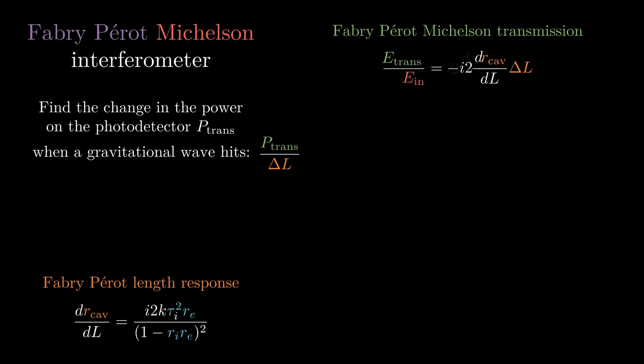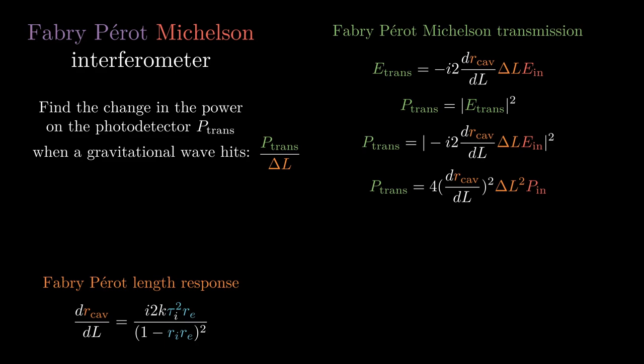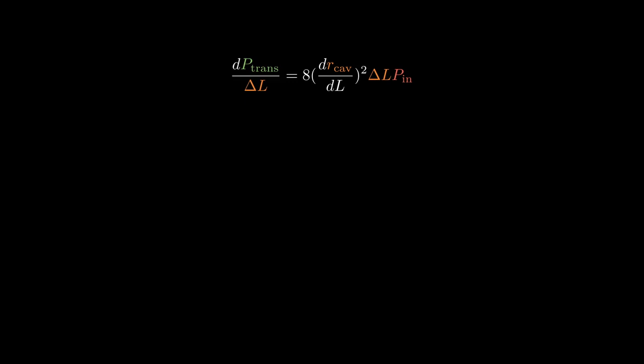Now we have the expression for the electric field in the transmitted port but we have one last trick of our sleeves. We can only measure power. The power in an electric field is just the electric field squared. And with some additional algebra we can get the transmitted power on the photo detector when a gravitational wave hits. So now finally this is the sensitivity of LIGO to gravitational waves or at least to length changes. Notice that it relies on our favorite big number, drcav dl squared. We also have our expression for the total power in transmission and we reviewed the Fabry-Perot length response.